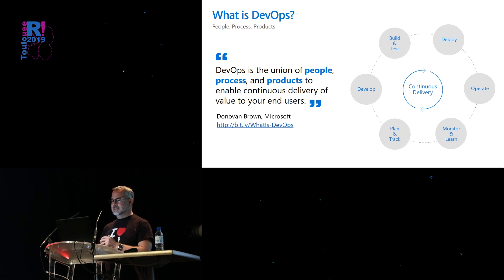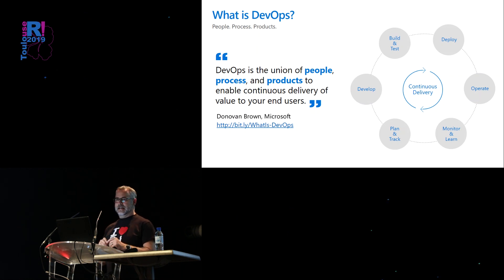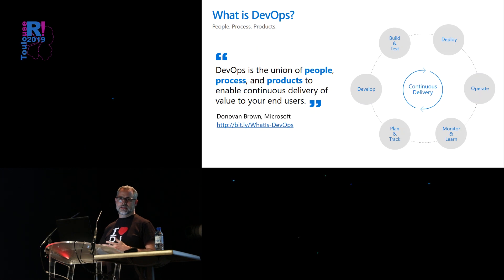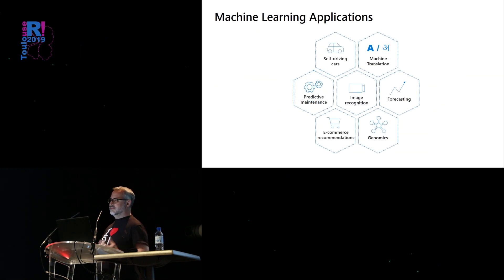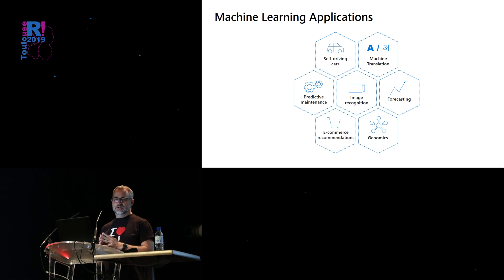There's a link where you can see more details about that. One of the interesting things about Donovan's definition is that he talks about delivering value as opposed to delivering software specifically, because it applies to all sorts of technical developments that incorporate software, hardware, and data. That's going to be particularly relevant when we're talking about delivering machine learning applications into production environments.